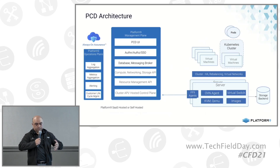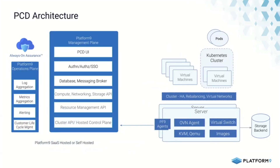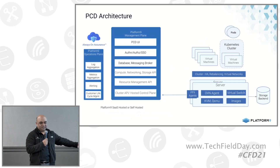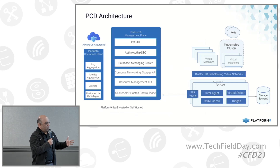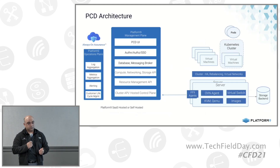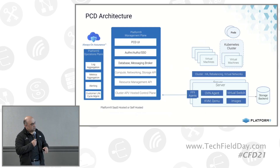When you want to onboard your servers into PCD, the process is very simple. Platform9 ships with a bootstrapping agent called the PF9 agent. You deploy it on each of your servers, they report back to the management plane, and using the UI or the API, you can configure each server — designating it as a hypervisor, using it to store images via object storage, connecting it to other storage systems, or making it a network traffic node. There are many configurations possible depending on the use case.